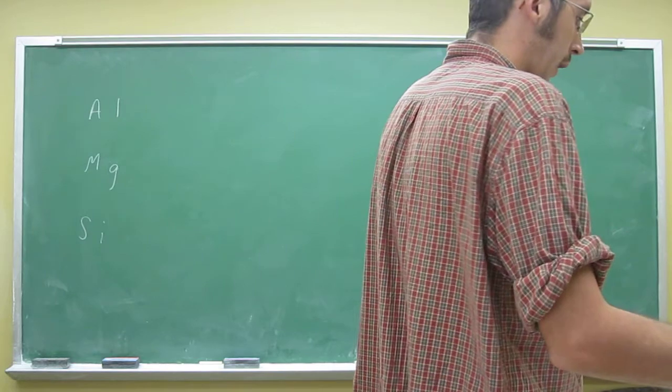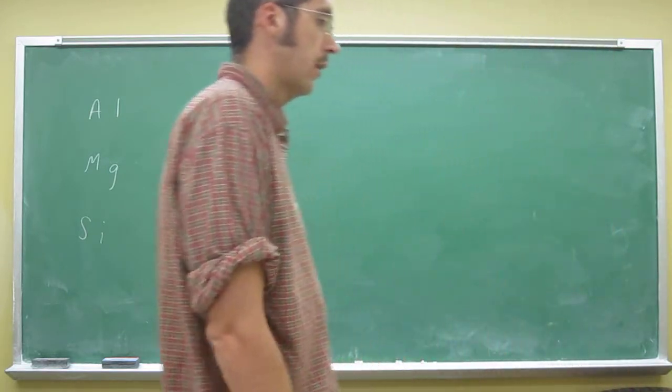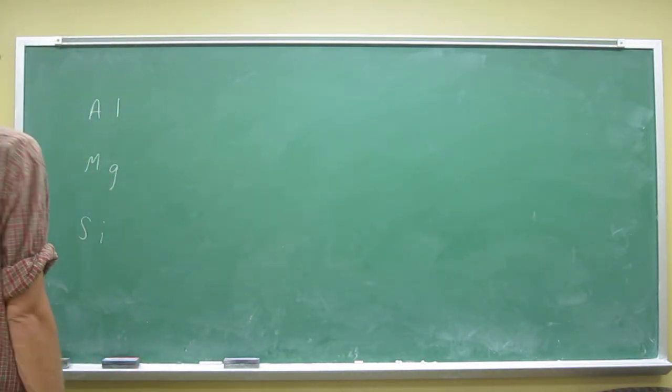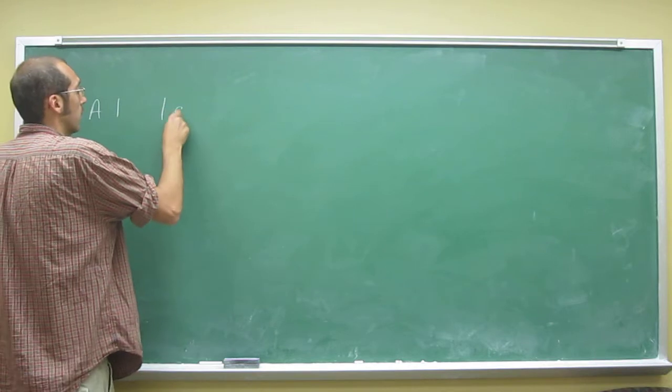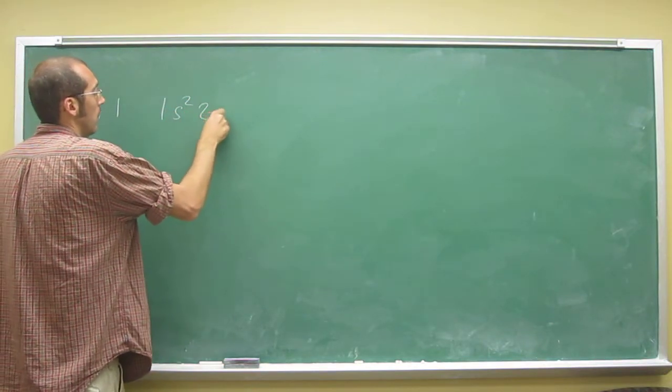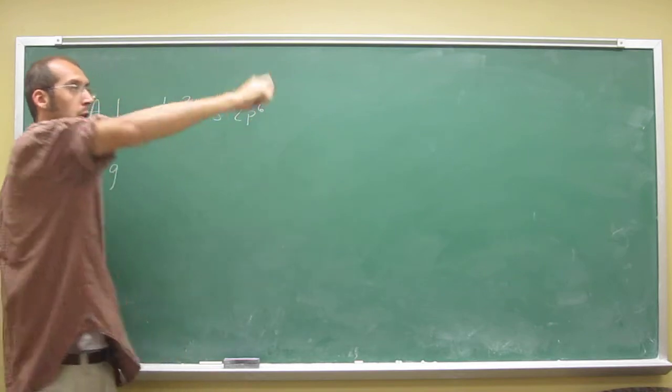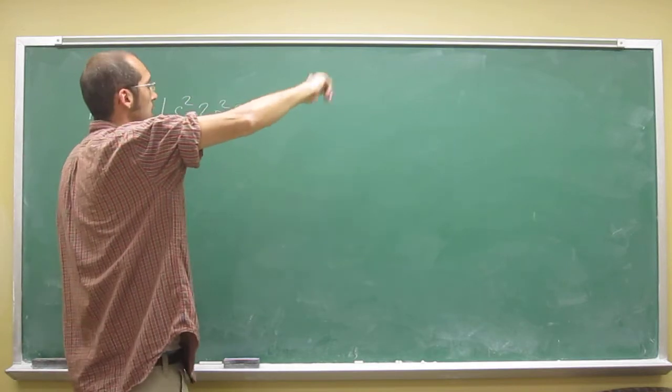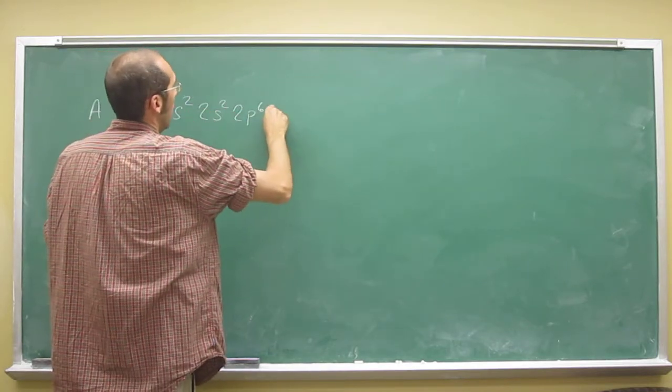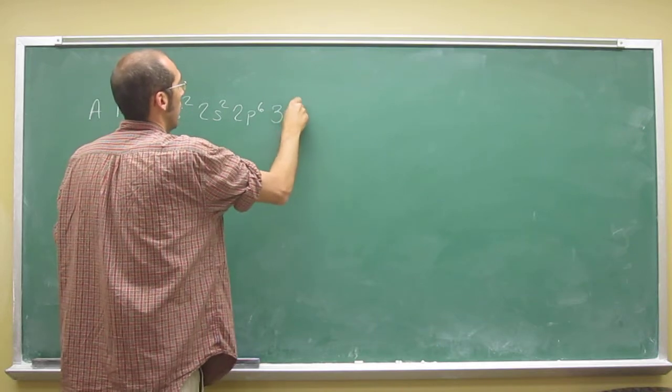So again, you just look at the periodic table. Aluminum's got 13 electrons in it. So the full electron configuration: 1s2, 2s2, 2p6. Remember, you're just counting. So s block first, then s block again, then the p block, then 3s2.